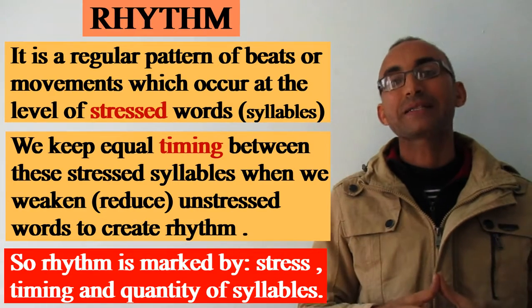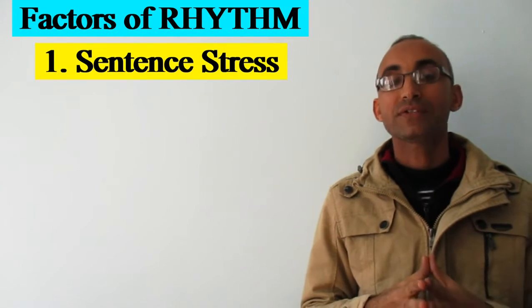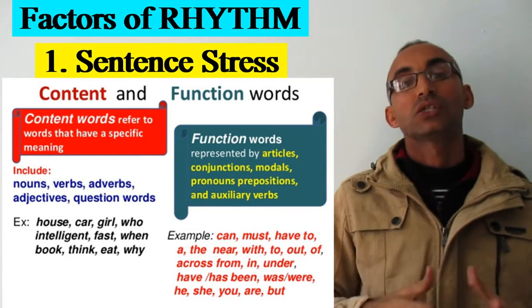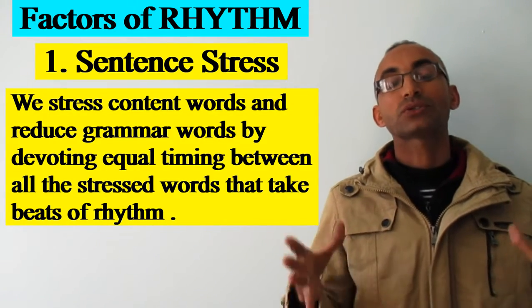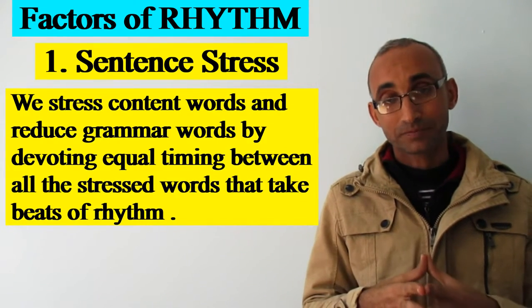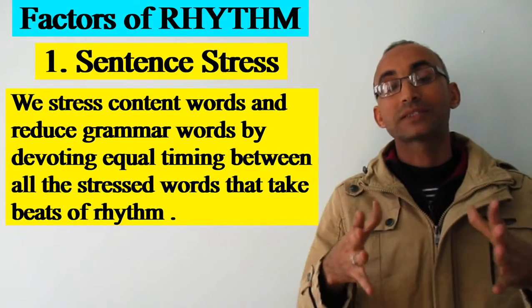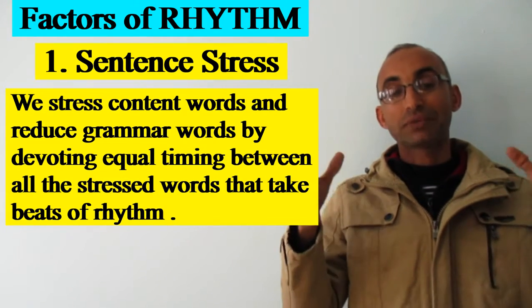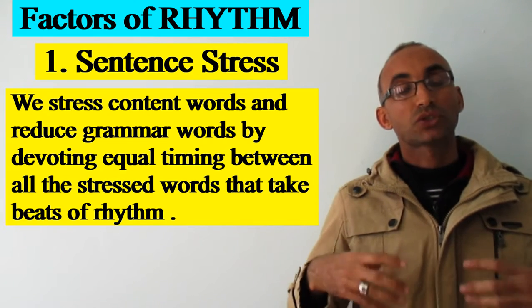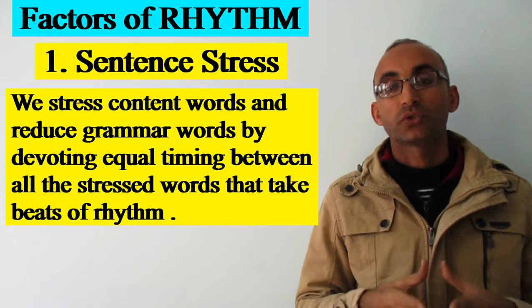English rhythm depends mainly on sentence stress. In any sentence, we have two types of words: content words, which are usually stressed, and grammar words, which are usually unstressed. We stress the stressed syllables in the content words and we weaken and reduce the syllables of the grammar words. We devote equal timing between all the stressed words in a sentence, and through these beats and that equal timing, we create rhythm in language.